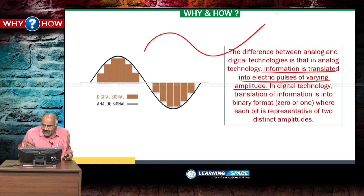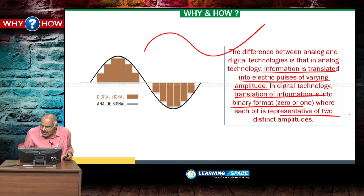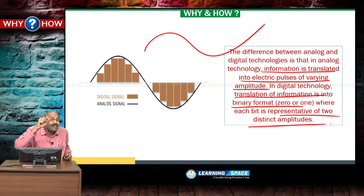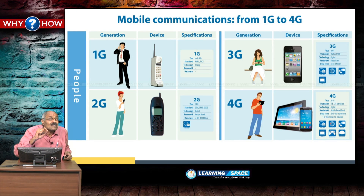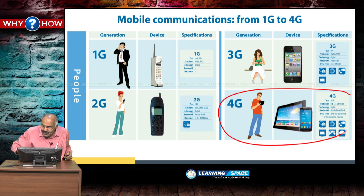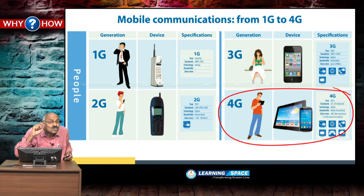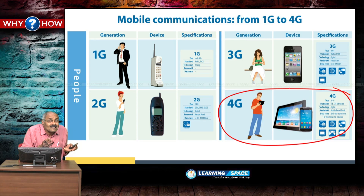In digital technology, translation of information is in binary format. Please look at the differences between 1G, 2G, 3G, and 4G. Basically, 4G is high-speed mobile broadband and we are currently in this phase. The future is 5G, which will lead to revolutionary changes like intelligent transportation, Internet of Things, and transformation in diagnosis and treatment of human beings in the medical field as well.